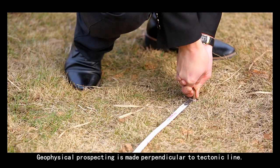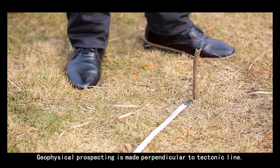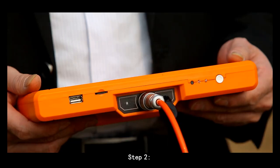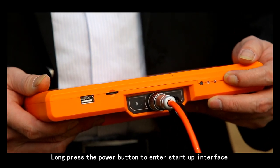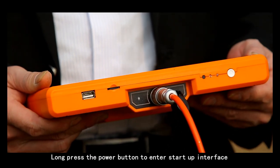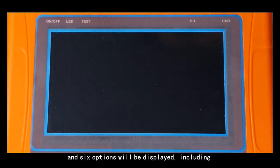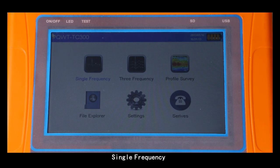Step 2. Long press the power button to enter startup interface and 6 options will be displayed, including single frequency, 3 frequency, profile survey, file explorer, settings, surface.